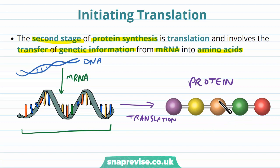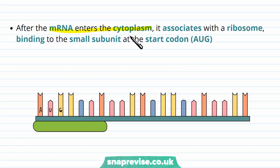The mRNA is made in the nucleus, but it enters the cytoplasm through the nuclear pores, and then it associates with a ribosome, which is a type of RNA molecule forming a large structure. The ribosome is made up of two subunits, a large and a small subunit. First of all, the mRNA binds to the smaller subunit at its first codon, or the start codon, which is always AUG.